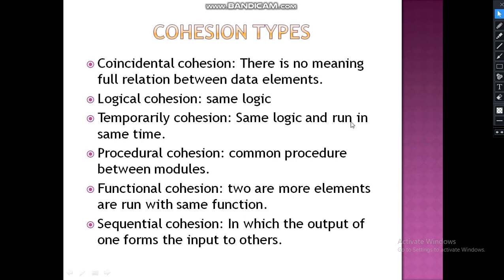Temporal cohesion means two or more elements have the same logic and run at the same time. Procedural cohesion means two or more elements follow the same procedure. Functional cohesion means two or more elements run with the same function. Sequential cohesion: the output of one element becomes the input of another element in the module.